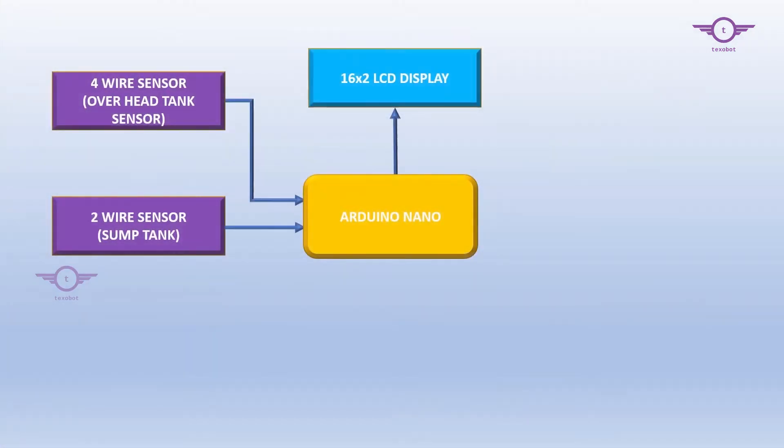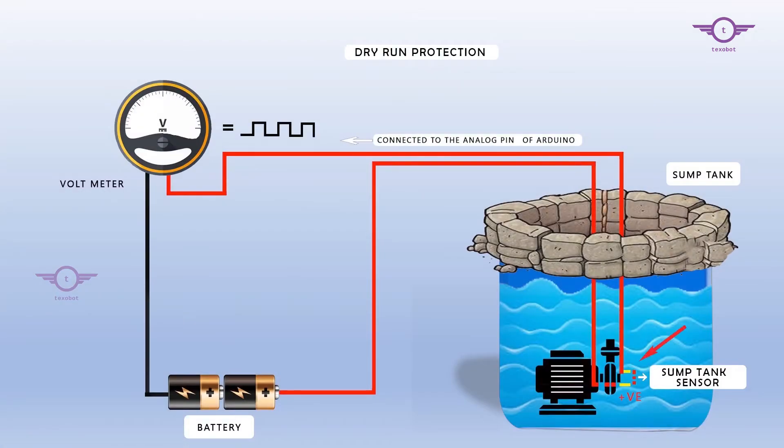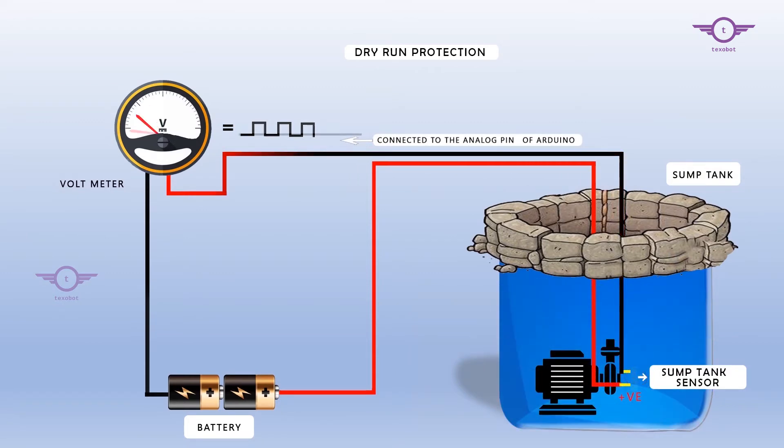The fourth block is the sump tank water level sensor. These are two copper wires which are dipped into the sump water tank. The analog pin present on the Arduino Nano will be used to sense the presence of water, same like for the overhead tank sensors.